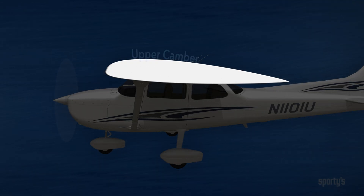The top curve is called the upper camber, and the bottom curve of the wing is the lower camber. In the next video volume, we'll continue with an in-depth look at all the forces involved in flight.